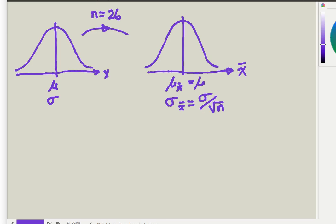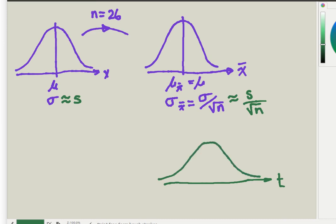Our problem is that we don't know what the population standard deviation is, so we'll use the best information we have — we'll use the sample standard deviation to approximate it. That means this distribution is also an approximation, so we approximate the standard deviation of sample means as the sample standard deviation divided by the square root of n. Because of that approximation, we need to use a t-distribution instead of a z-distribution. The t-distribution looks like a normal distribution but flattened out a bit, and there's a different one for every degree of freedom. Our degree of freedom is n minus 1, which is 25.